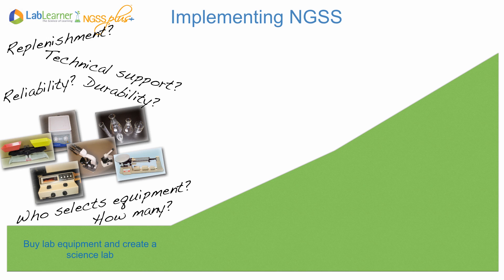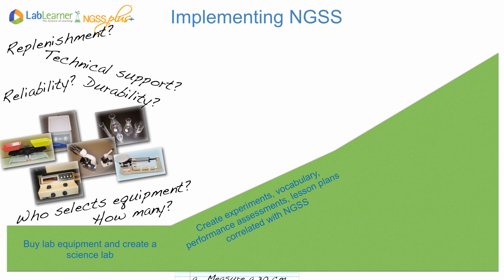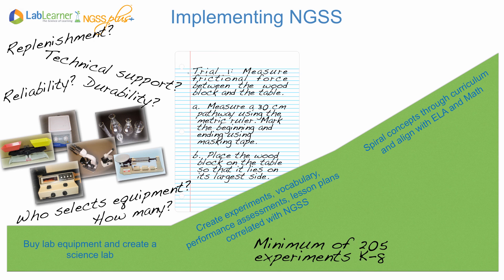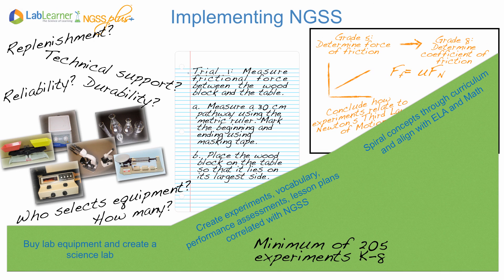What types of things do you need to consider in order to build and supply your lab? You'll need to decide who will select the science equipment — will it be the principal, a science teacher? Who has the expertise to determine which scientific equipment to buy, and how many pieces will you need? Will they be reliable and durable? You'll also need to create the experiments, write lesson plans, develop performance and other assessments, all correlated with the next-generation science standards. Once designed, you'll need to spiral the concepts and experiments throughout the curriculum.